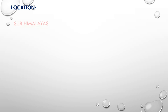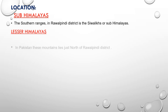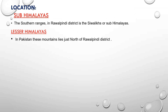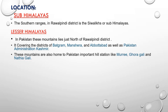According to their location: Sub-Himalayas is the southern range, located in Rawalpindi district, also called the Siwalik Hills. Lesser Himalaya in Pakistan lies north of Rawalpindi district — it covers the districts of Battagram, Mansehra, and Abbottabad, as well as Pakistan-administered Kashmir. The Lesser Himalayas are home to Pakistan's important hill stations: Murree, Nathia Gali, Gora Gali, and Ghora Gali.